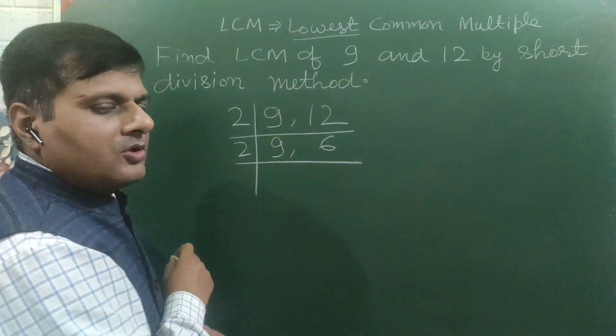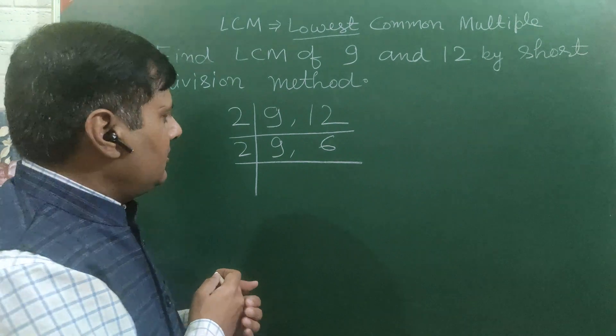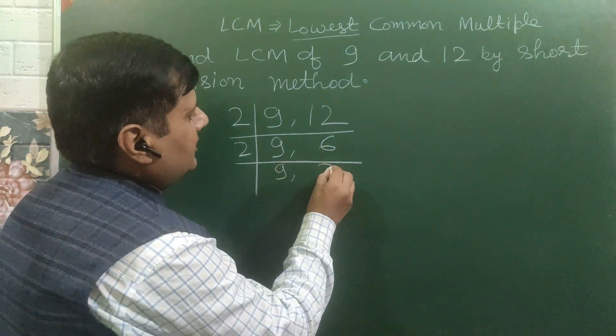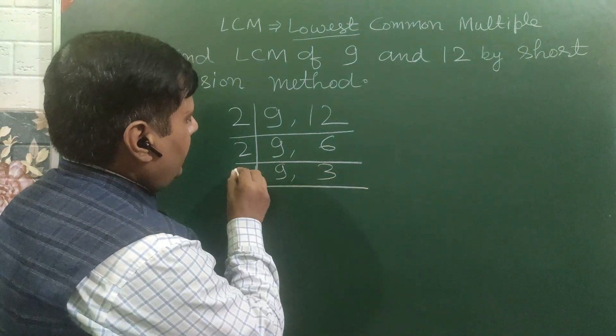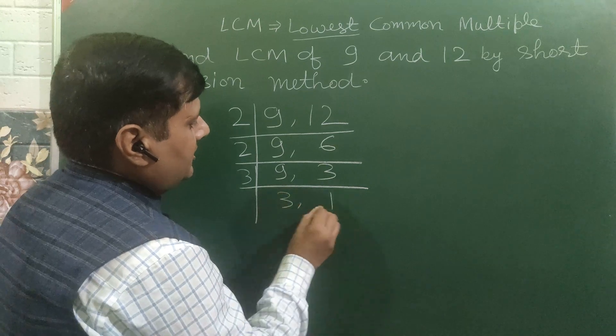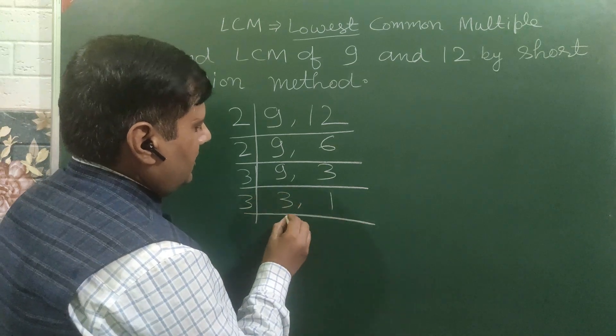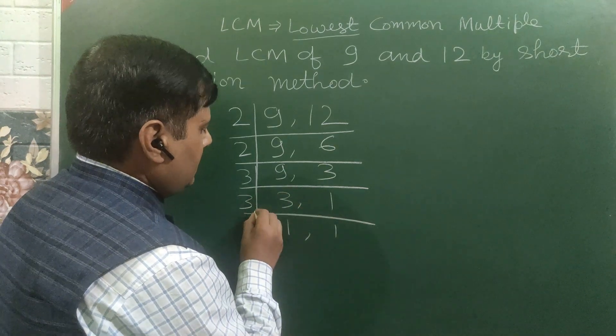Again 2 because 6 is divisible by 2: 9 as it is, 2 threes are 6. Now you write 3: 3 threes are 9, 3 ones are 3. Again 3: 3 ones are 3, 1 as it is.